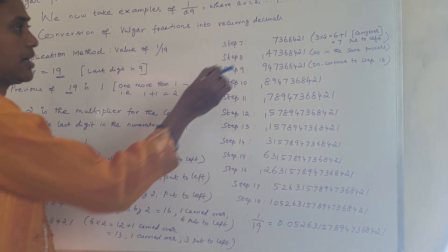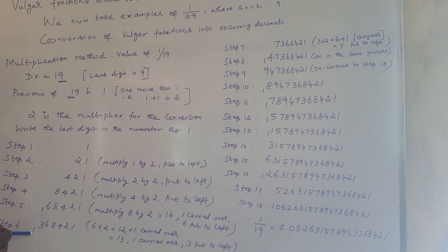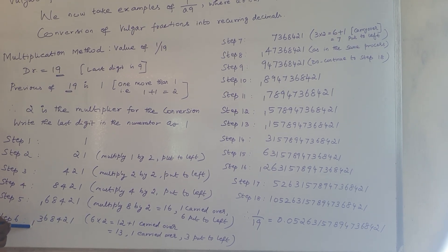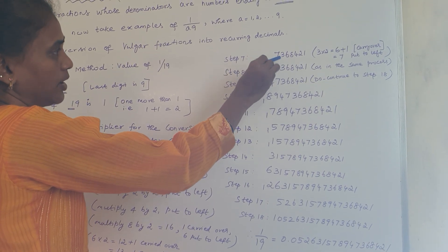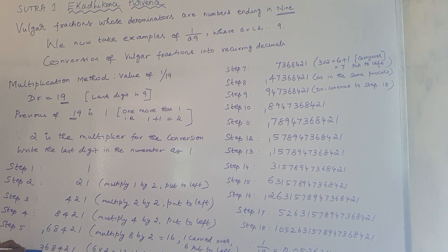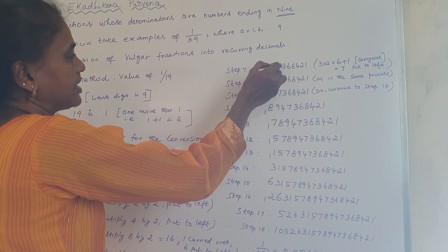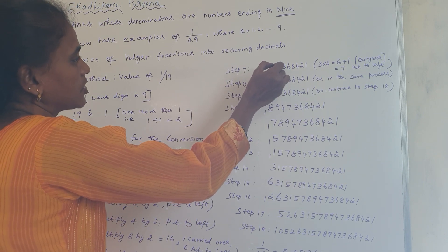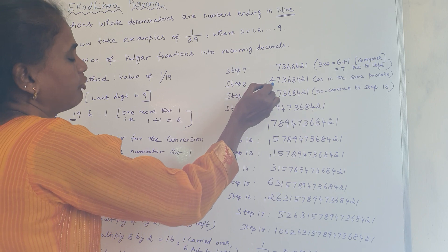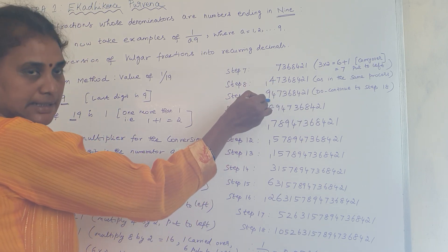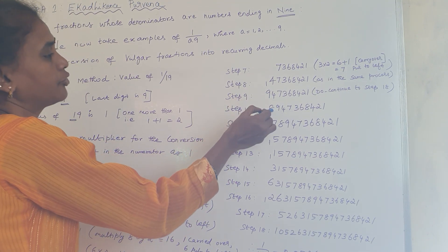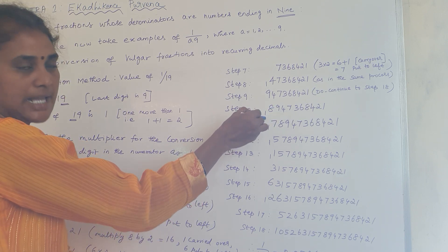In step 7, we have 3 with a carry of 1. So 3 multiplied by 2 is 6, and 6 plus 1 is 7 — no further carry. In step 8, 7 multiplied by 2 is 14 — 4 to the left and 1 is carried over. In step 9, 4 times 2 is 8, plus 1 is 9. Multiply 9 by 2: 9 times 2 is 18 — 8 to the left and 1 is carried over.